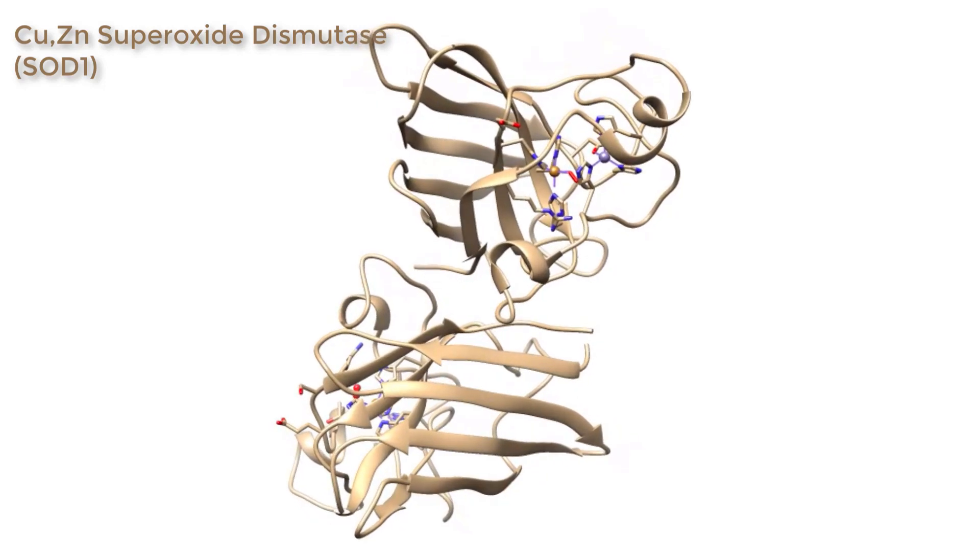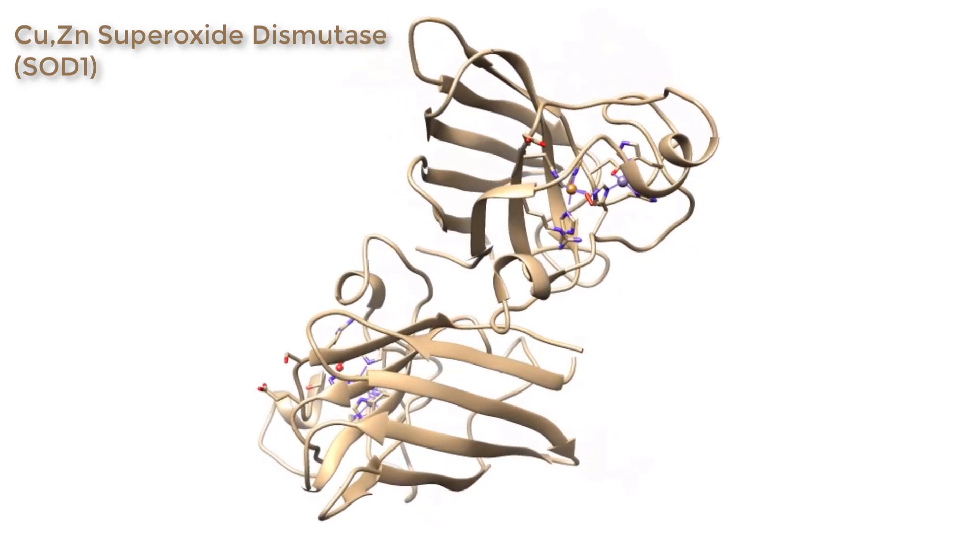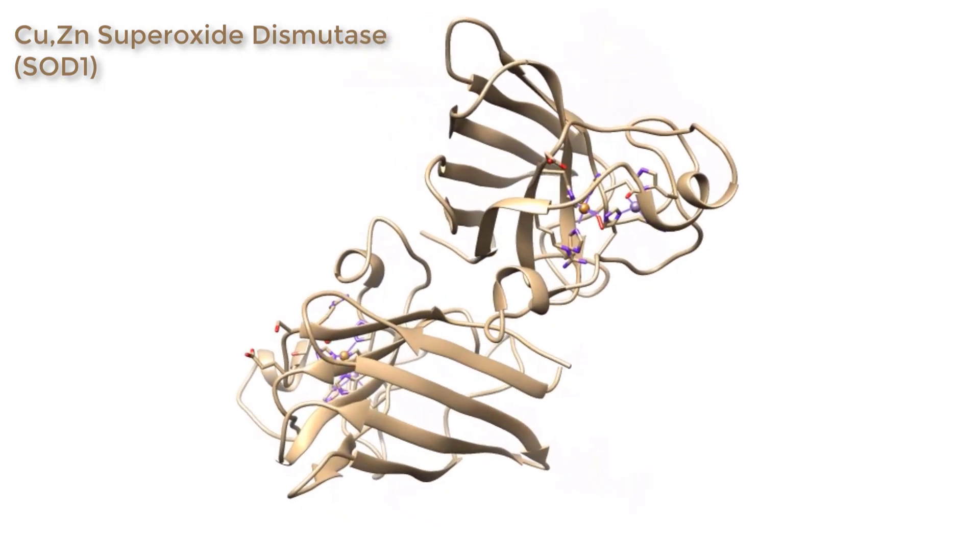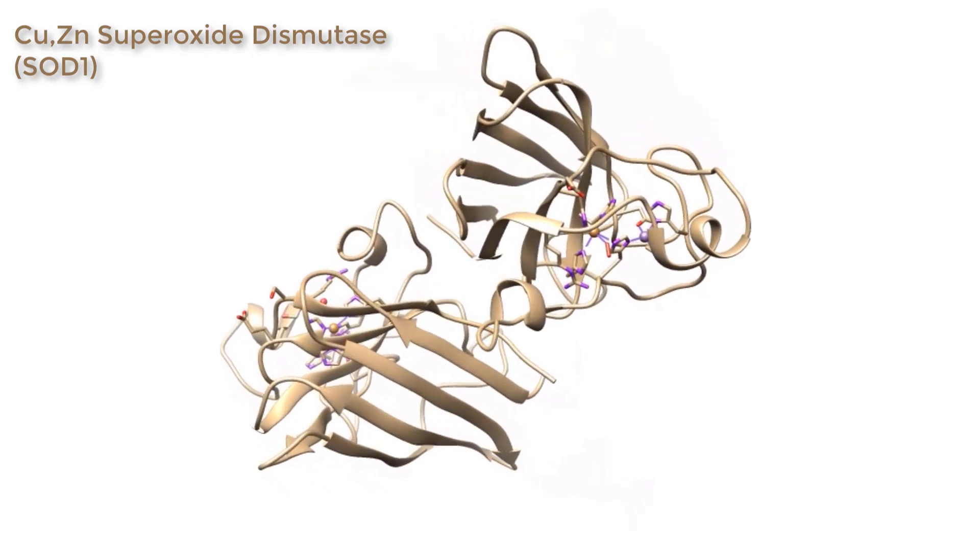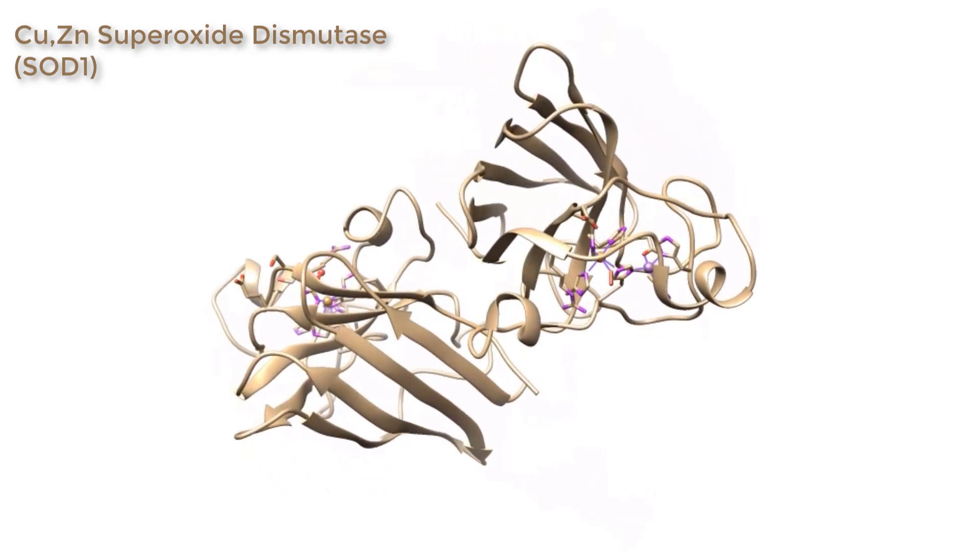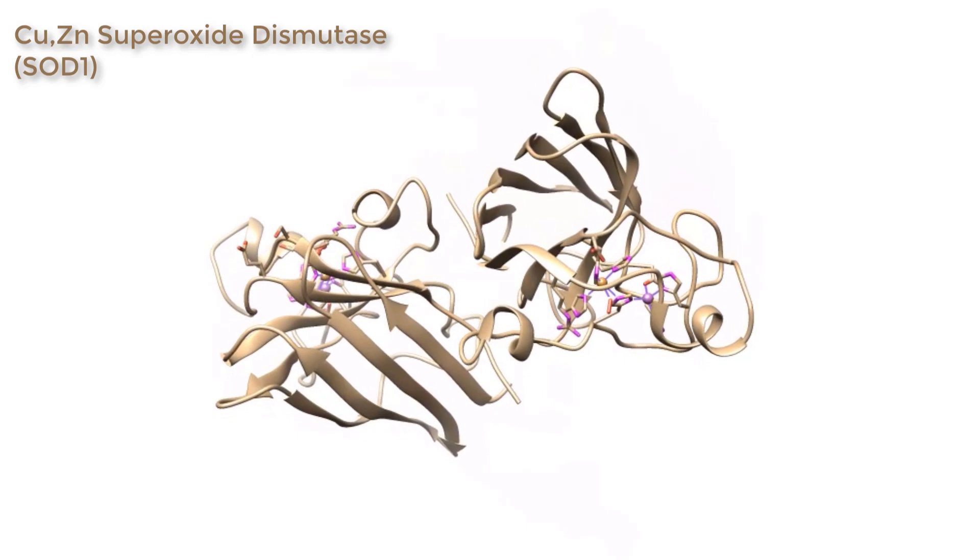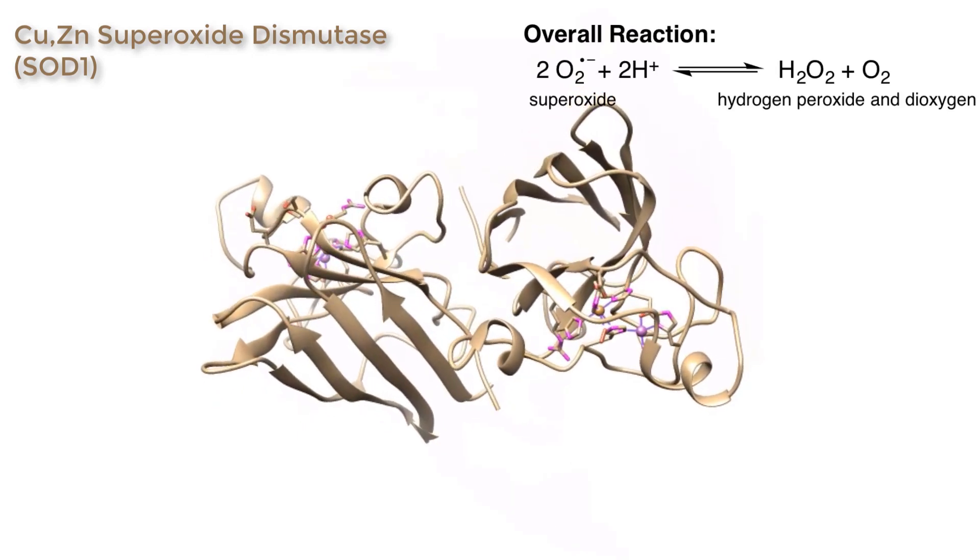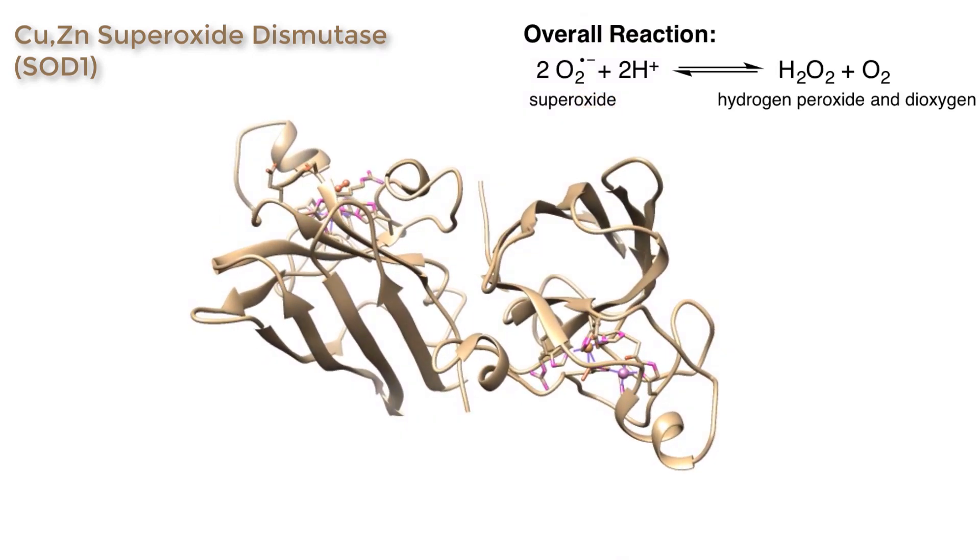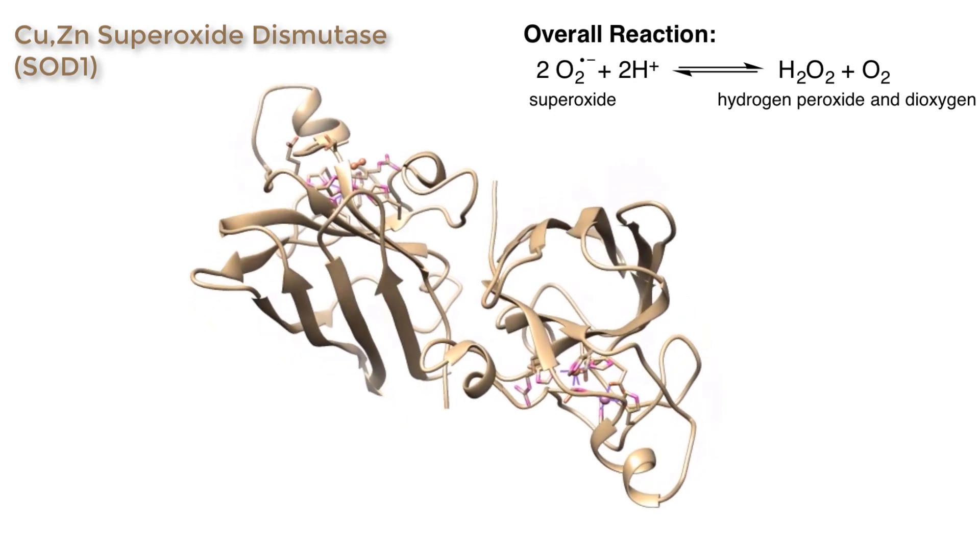This is the copper zinc superoxide dismutase protein with one superoxide molecule complexed to each active site. The role of the copper zinc superoxide dismutase system is to catalyze the conversion of a potentially toxic superoxide anion and convert it into the less toxic substances hydrogen peroxide and dioxygen.